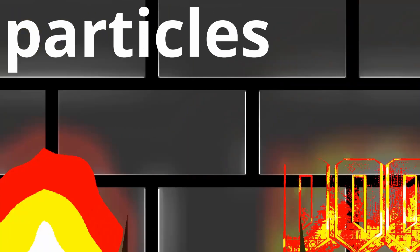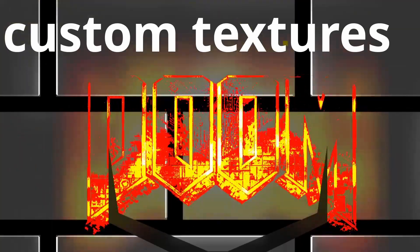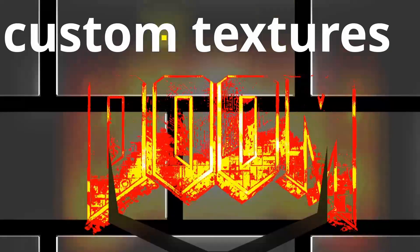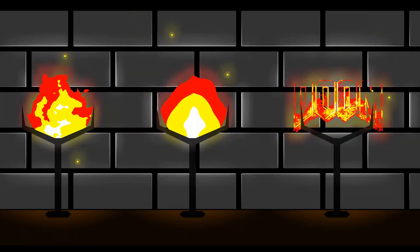We'll also cover creating normal maps using Nvidia texture tools, using world environments to get a glow effect, creating particles for embers spitting off, and pumping custom textures into this shader. Here's the final effect — let's get started!